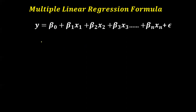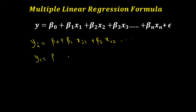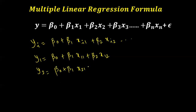Most of the time this is written as yi = β0 + β1·xi1 + β2·xi2 + ... For the first observation: y1 = β0 + β1·x11 + β2·x12 + ... For the second observation: y2 = β0 + β1·x21 + β2·x22 + ... An error term epsilon is added to each equation.